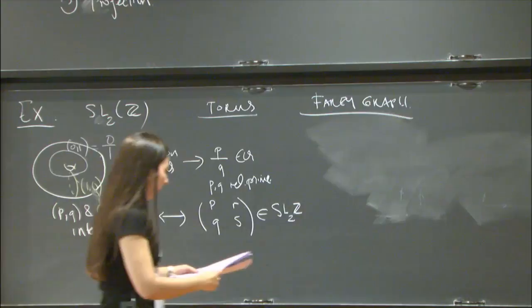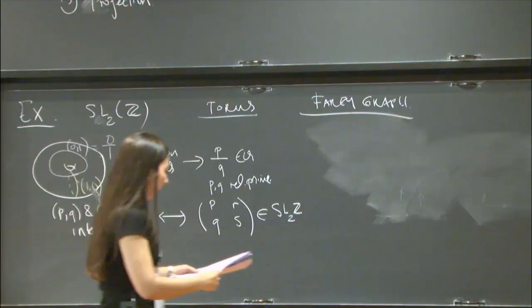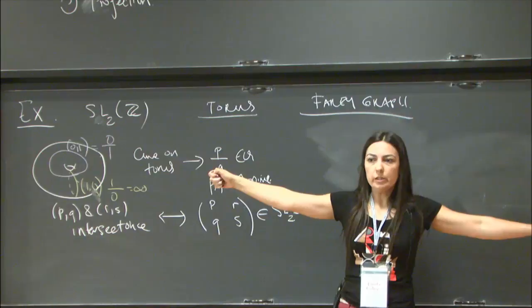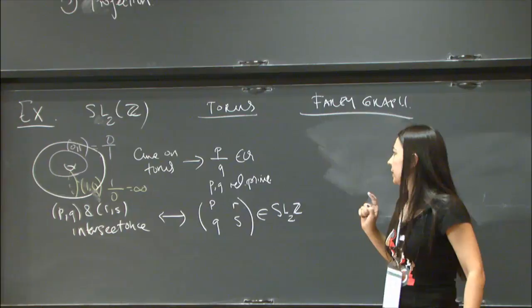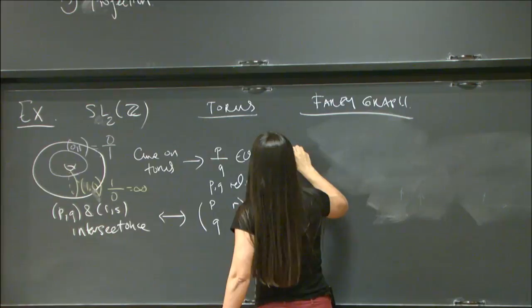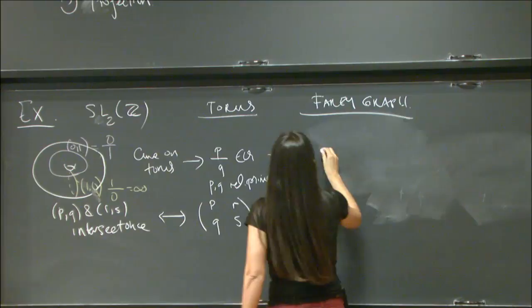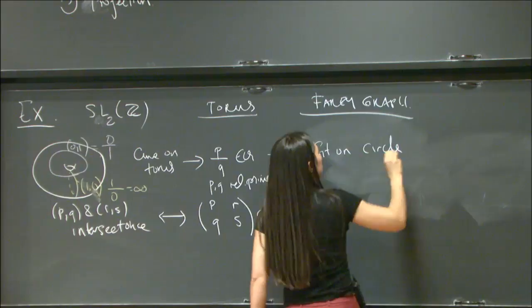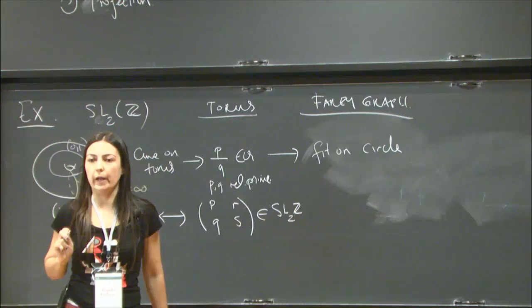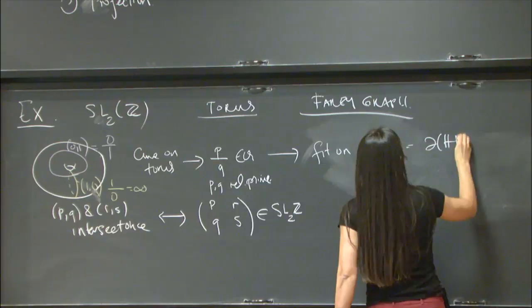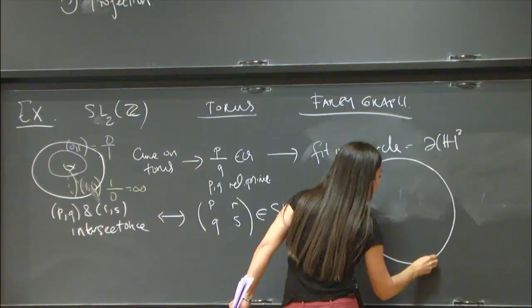On the other hand, you can do a stereographic projection onto the circle, and all these rational numbers fit on the circle. You can think about the curves as numbers on the circle. I'm thinking about the circle as the boundary of the hyperbolic plane in the disk model.